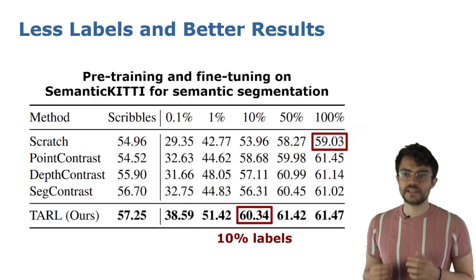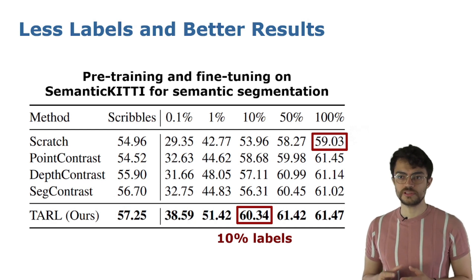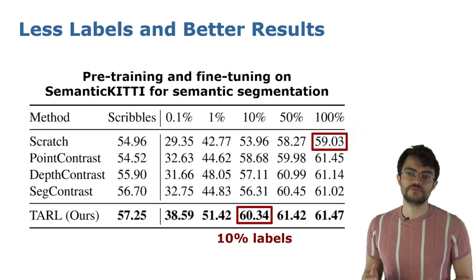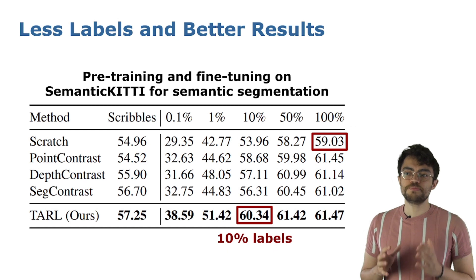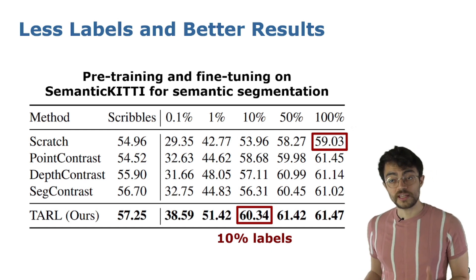In our experiments, we tested our approach by fine-tuning into different downstream tasks. For semantic segmentation, our method achieved the best performance between previous state-of-the-art methods in all the subsets of labels used for fine-tuning. What's interesting is that with only 10% of the annotated data, we could surpass the results of the network trained from scratch with all the labels.